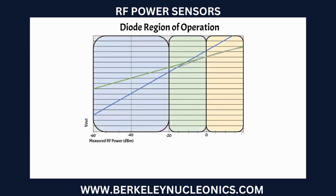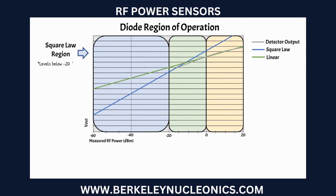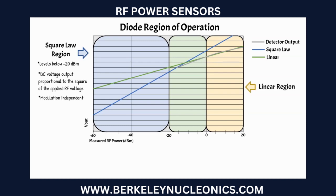The diode region of operation is typically separated into three sections. The square law region occurs at levels below about -20 dBm, where the diodes produce a DC voltage output that is closely proportional to the square of the applied RF voltage. This region is also modulation independent.